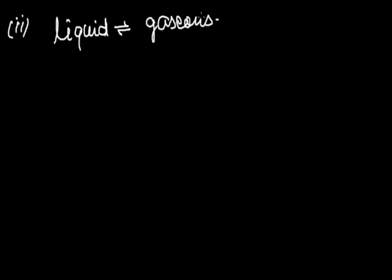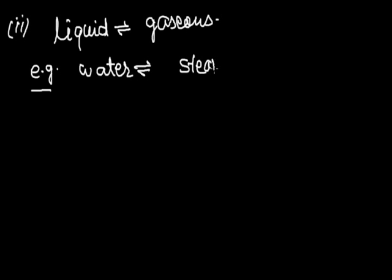Interconversion of liquid into gas and vice versa. Liquid can be converted into gas by just heating it. Similarly, gases can be converted into liquid by cooling them. For example, if you want to convert water into steam, we have to heat the water, and if you want to convert steam into water, we have to cool the steam.